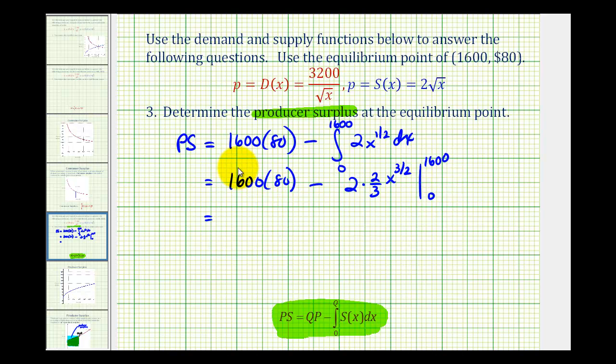1600 times 80 is 128,000, minus, this is going to be 4/3. And then we'll replace x with 1600, so we'll have 1600 to the 3/2 minus, this will be 0 to the 3/2.